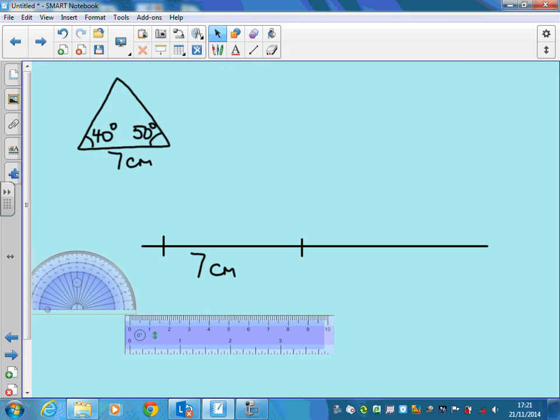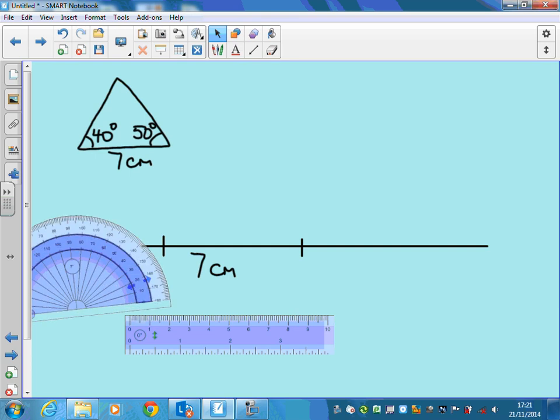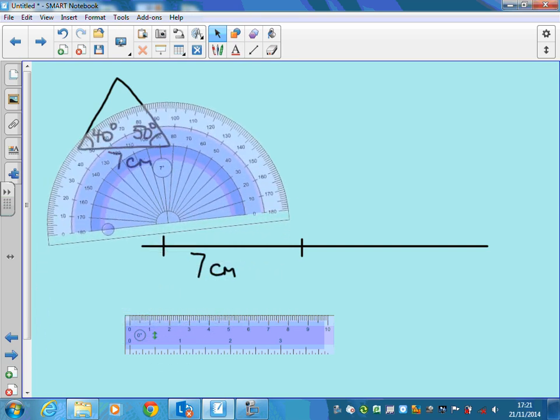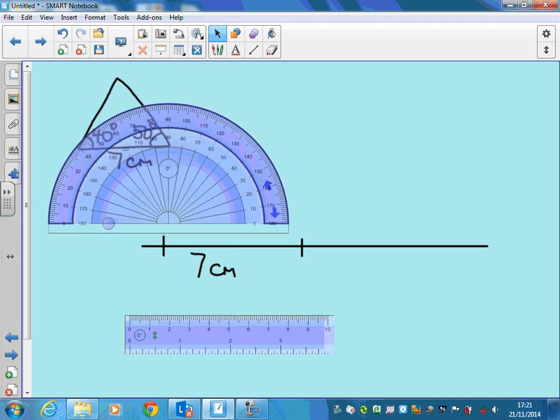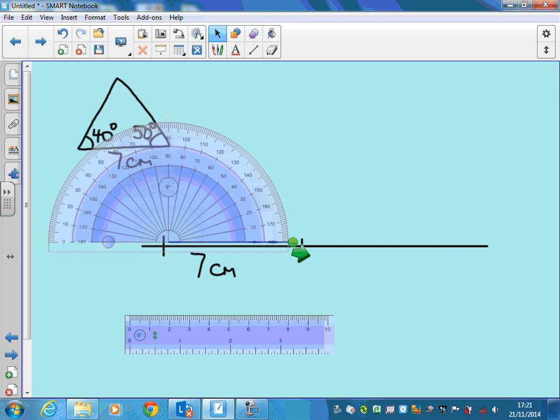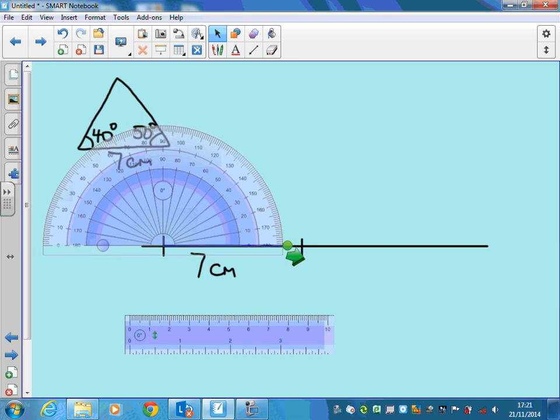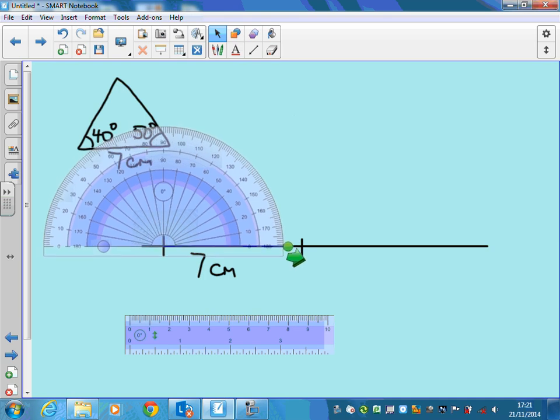To measure the angles, you're going to need a protractor. Let's recap how to set it up. The baseline of the protractor needs to be set up on the line from which you are going to measure your angle, and the gun sights in the middle of the protractor need to be set up on the corner that you want to construct the angle.